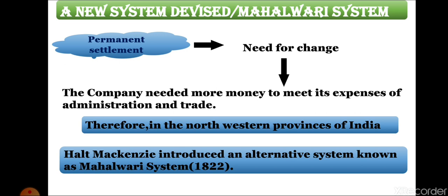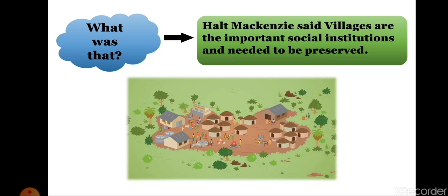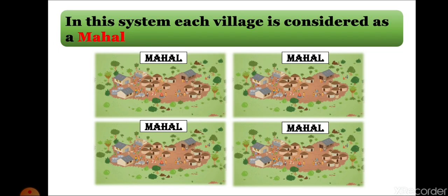Holt Mackenzie said that villages are important social institutions and needed to be preserved. He believed villages are the best social institution in a country like India, so he gave importance to villages. In the Mahalwari system, each village is considered as a mahal. This system is named Mahalwari because every village is named as a mahal.